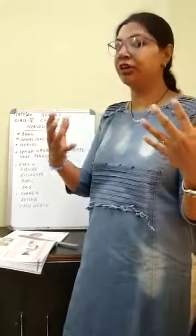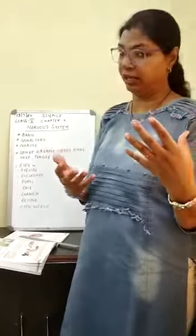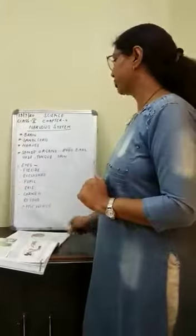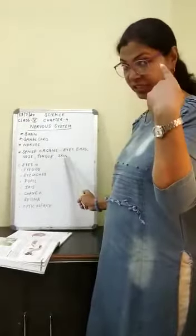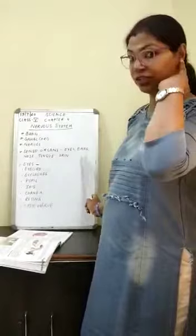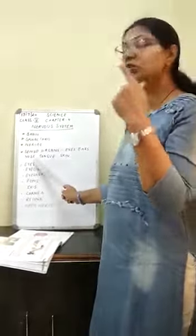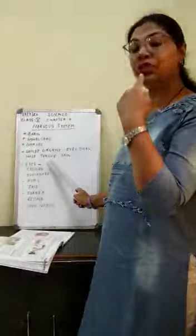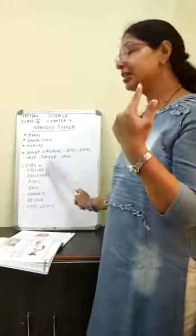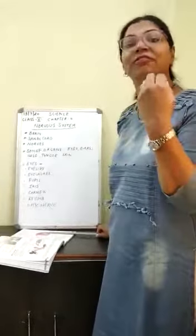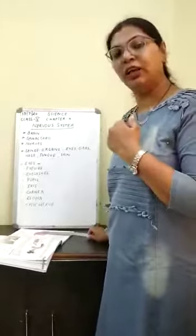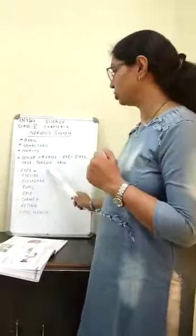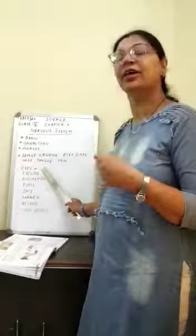So sense organs are very important parts of our body, and there are five types of sense organs: eyes through which we see, ears through which we hear, nose through which we smell, tongue through which we taste, and skin through which we feel. Today we are going to start with eyes in the next video.